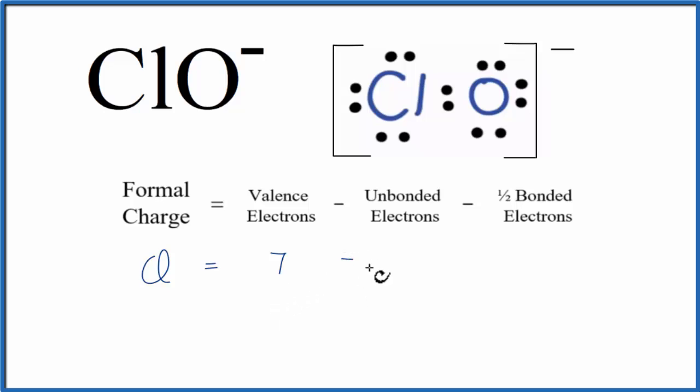We'll subtract from that unbonded valence electrons. These are the electrons that aren't involved in chemical bonds. So 2, 4, 6 unbonded valence electrons.